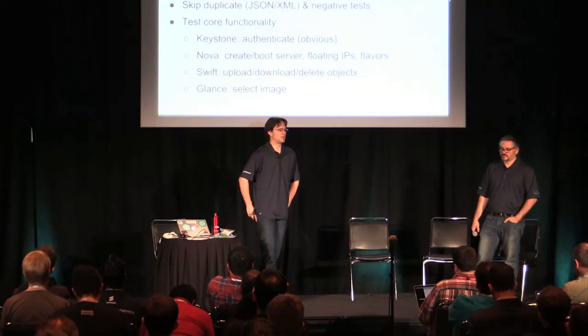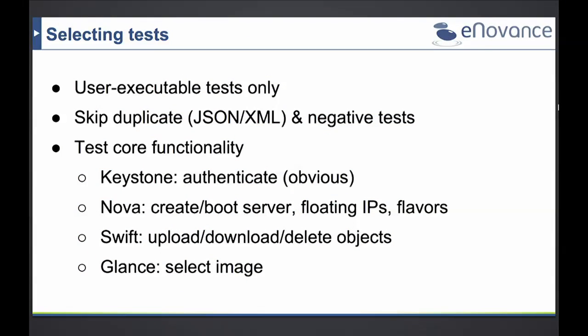The next step is to select some tests. We focused first on user-executable tests, which gives you the chance as a non-administrator to run tests — especially useful if you're a developer wanting to try a different cloud and vendor and see if they support everything you need. We skip duplicate tests that run as both JSON and XML since they do the same thing behind the scenes, and we're skipping negative tests for now. We're focusing on core functionalities: for Keystone, authentication; for Nova, creating and booting a server, assigning floating IPs, or using different flavors; for Swift, creating containers, uploading and downloading objects; for Glance, selecting different available images.